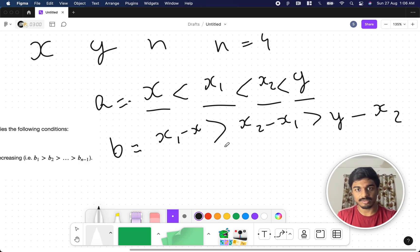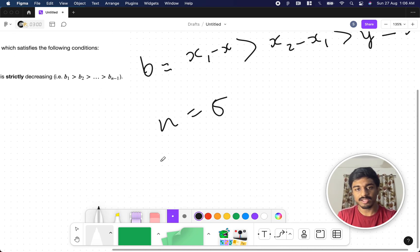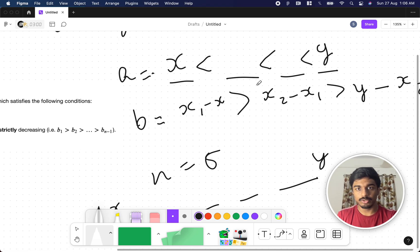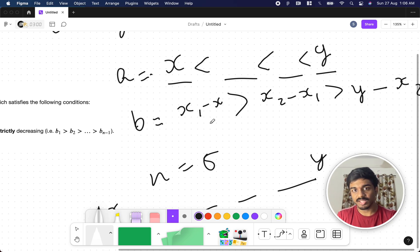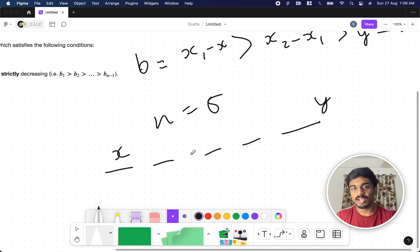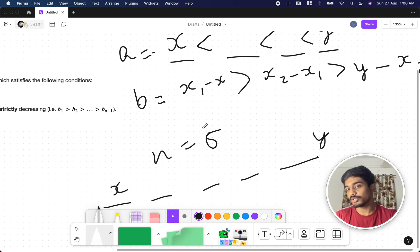So x1 minus x is greater than x2 minus x1 is greater than y minus x2. So our job is to fill these gaps here. So if n equals 5 there will be 1 2 3 4 5, x and y they'll already give. We need to fill the gaps in such a way that this condition is valid and this less than condition is also valid.